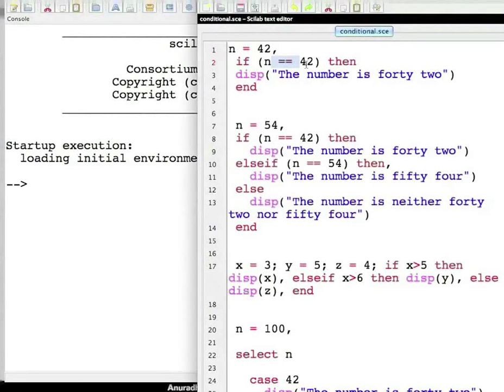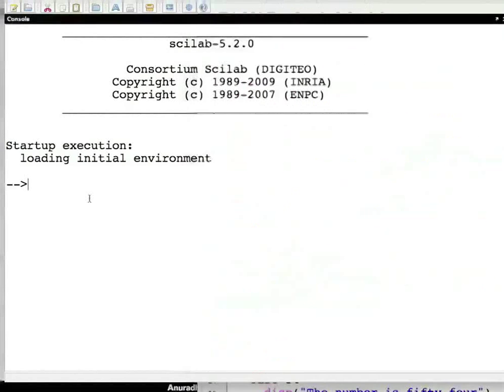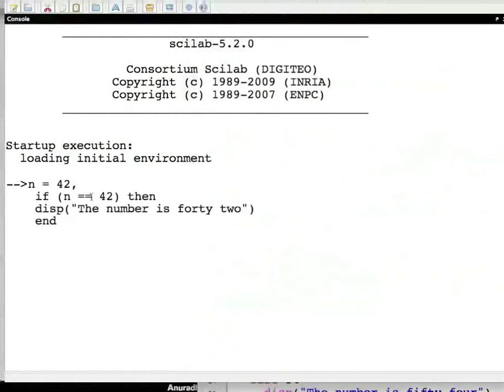Here the comma after the first line is optional. Also the 'then' keyword is optional - it can be replaced by a comma or a carriage return. The 'end' keyword ends the if construct. On executing the script we see the output as follows.